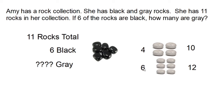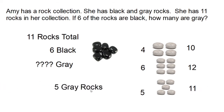What number is more than four and less than six? Five, of course. So I'm going to guess five. And now I'm guessing five because I know more. Let's see if this guess is correct by checking. One, two, three, four, five, six, seven, eight, nine, ten, eleven. That's correct. We know that Amy has five grey rocks in her collection. You see how guess and check allowed us to eventually get to the answer? Let's look at another problem.